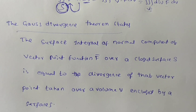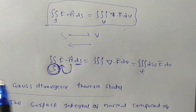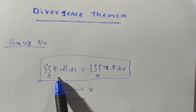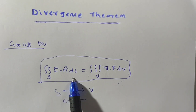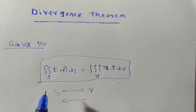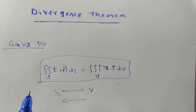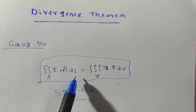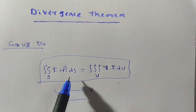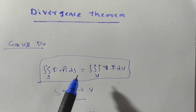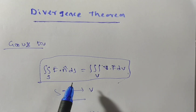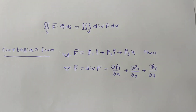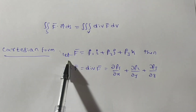Now, the Cartesian form of the Gauss divergence theorem. The relation is between surface integral and volume integral. Note that S must be a closed surface — only then can you apply the divergence theorem. This divergence theorem is in three-dimensional space; it is the Green's theorem in three dimensions. Now coming to the Cartesian form.